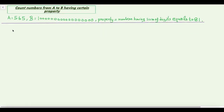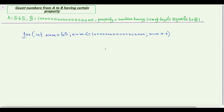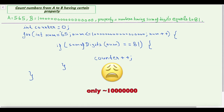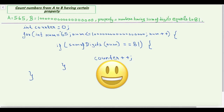If we try to solve this problem using brute force, what we will generally do is iterate from a to b and check if the number's sum of digits equals 81 and increment our counter. But in reality this loop is not feasible because we can run any loop only up to 10^7 in one second. So let's see how we can solve this type of problem in feasible time complexity.